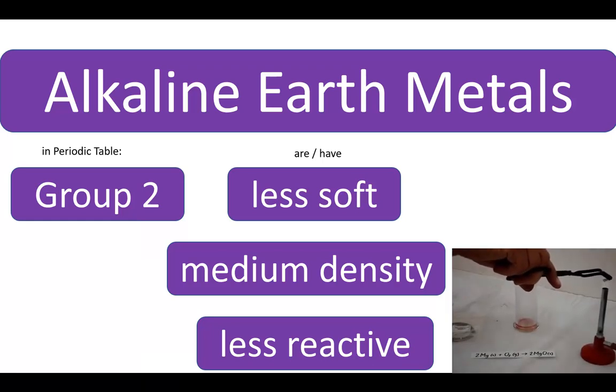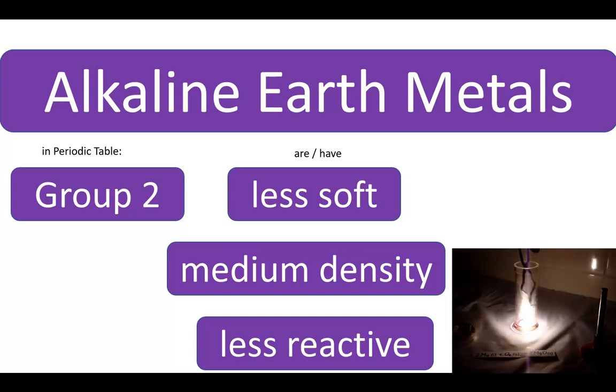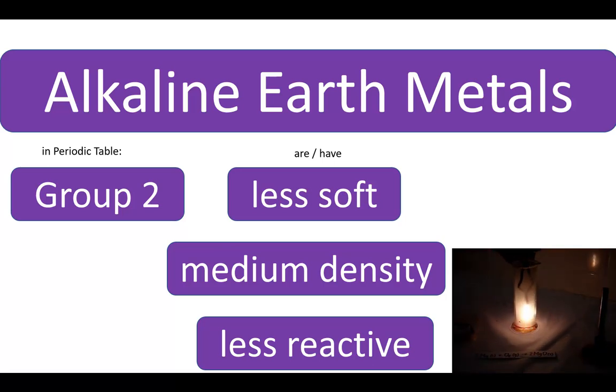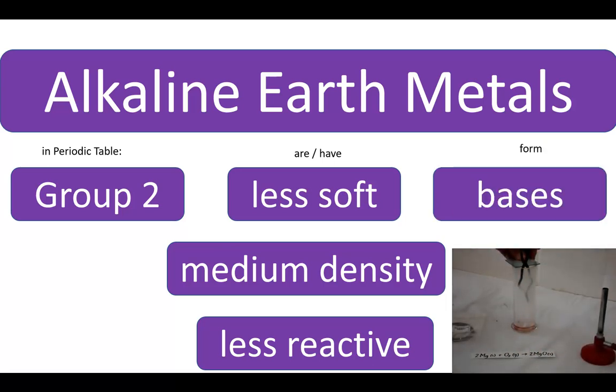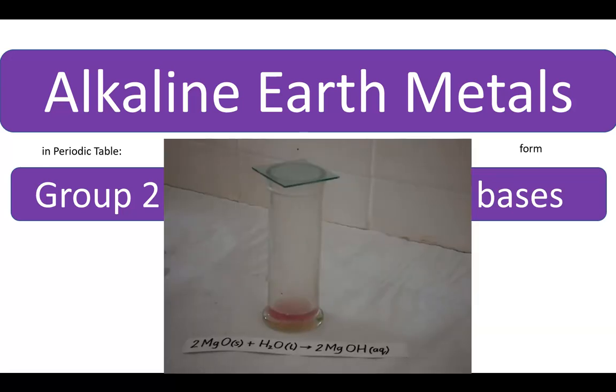If you burn magnesium, it forms a bright white light. In the olden days, that was how they made flashes for cameras. Like the alkali metals, the alkaline earth metals react to produce soluble basic, in other words, alkaline products.